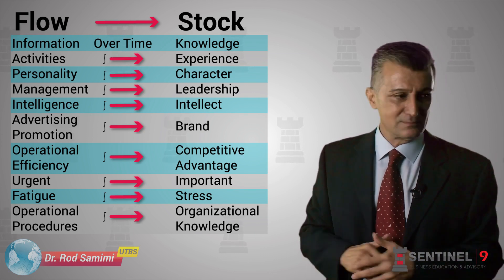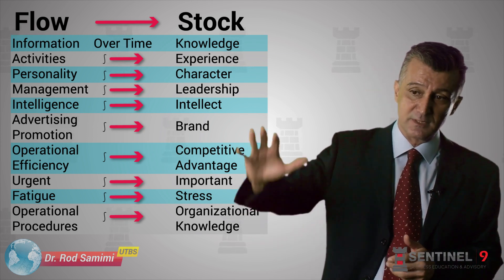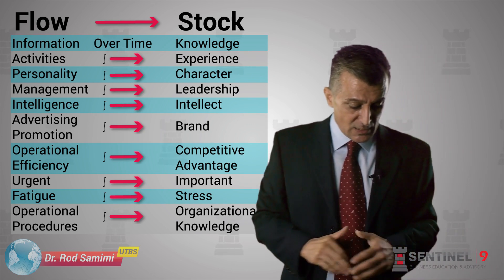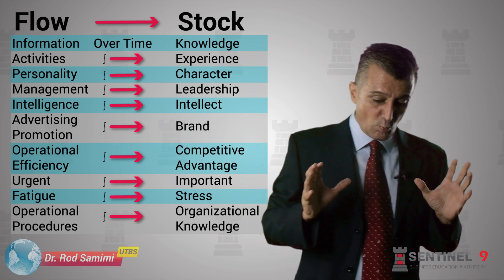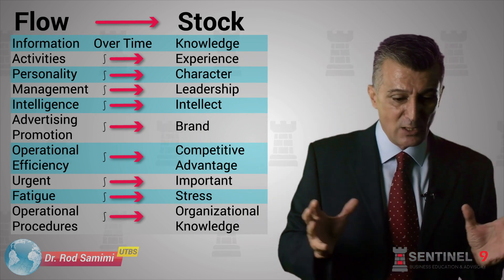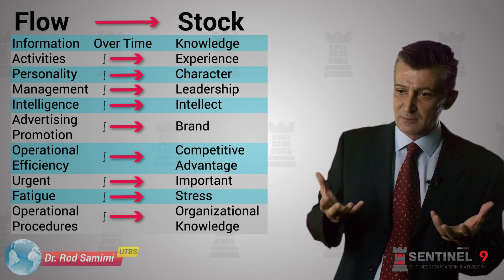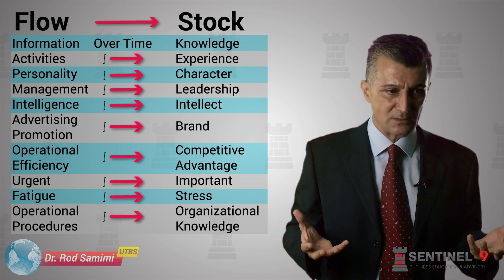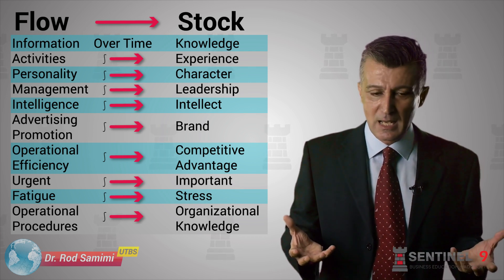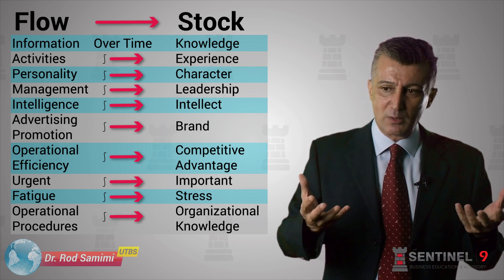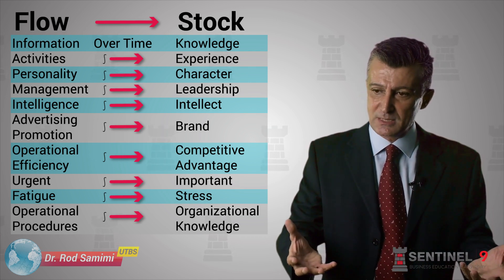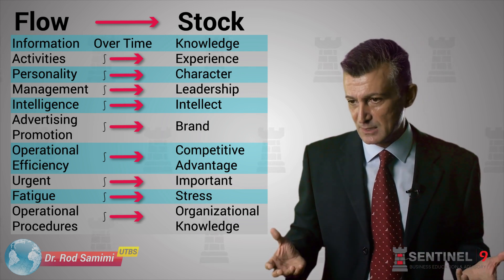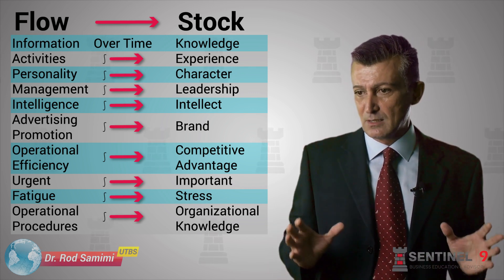Efficiency is a flow variable; effectiveness is a stock variable. Having come to terms with this dichotomy — which is commonly used in literature by many scholars and practitioners — we will look at what happens in business when these variables are played within certain games in a game-theoretic context.